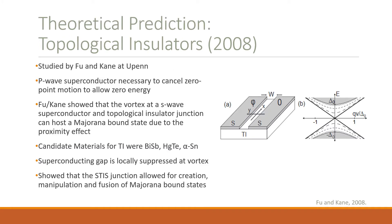Due to zero-point motion, most systems will always have a minimum finite energy. A P-wave superconductor is necessary to cancel this zero-point motion to allow zero energy, which is necessary for Majorana bound states to form. However, no material is known to be a P-type superconductor. Here at UPenn in 2008, Fu and Kane predicted that Majorana bound states can be hosted at the interface of a topological insulator and an S-wave superconductor, due to the proximity effect of the superconductor. Their proposed system is shown here, and at this junction, the superconducting gap is locally suppressed at a vortex, allowing Majorana bound states to form at that point.